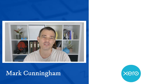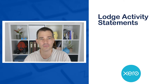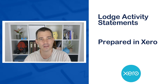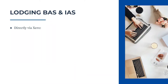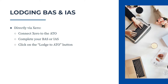Hello, Mark Cunningham here. In this video I'm going to show you a couple of different ways that you can lodge your activity statements to the ATO that you've prepared in Xero. The first way is going to be to lodge them directly via Xero. What you need to do for that: first, connect your Xero account to the ATO, then complete your BAS or IAS returns, click the lodge to ATO button, and the activity statement data will be sent to the ATO.